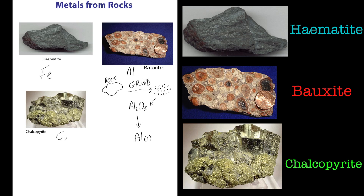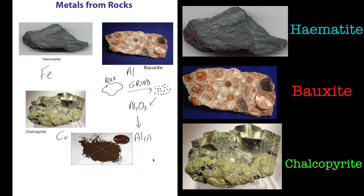A good example is iron oxide - you've probably all heard of this. Iron oxide is a nice red-coloured powder, and it's what rust is. If you leave an iron nail out for too long, it'll turn into this nice iron oxide colour - that's the oxide of the element iron.